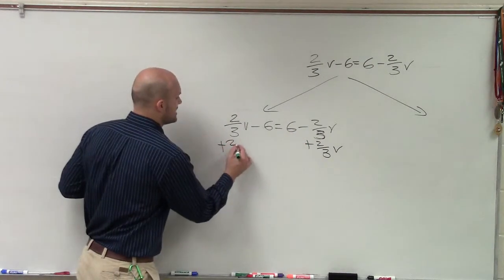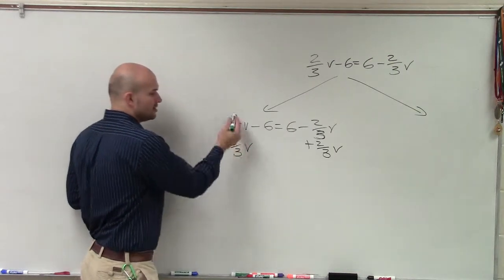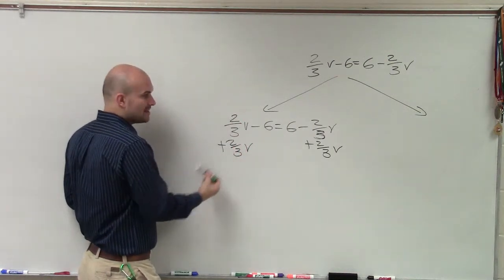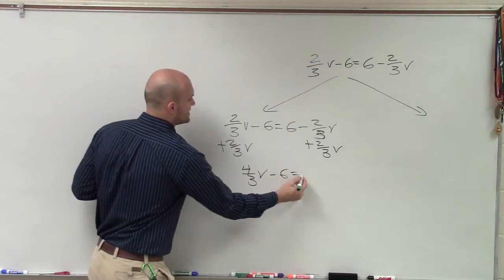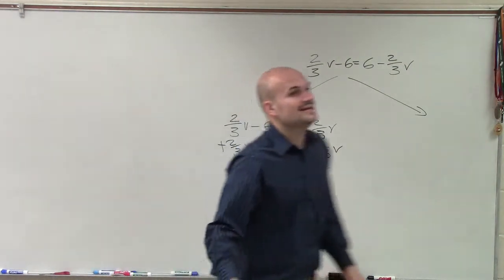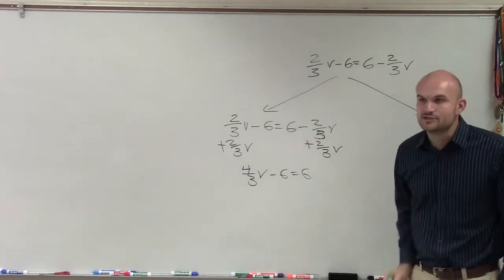So if I add two-thirds v on both sides, now since these have the same denominator, two-thirds plus two-thirds is four-thirds v. Minus six equals six. Now, ladies and gentlemen, this is a two-step equation.